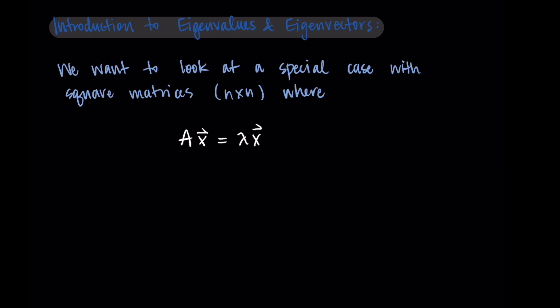We've been looking at Ax equals b, and now we're going to look at this special case where Ax is equal to lambda times x, where lambda is a real-valued scalar. Lambda is just another Greek letter that we use, and it's the one most commonly used for this subject of eigenvalues and eigenvectors.